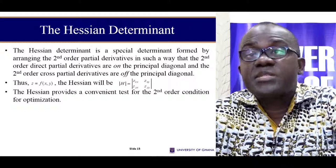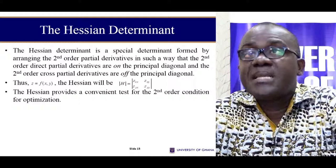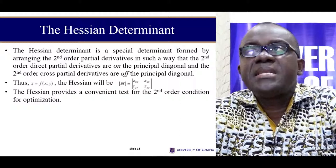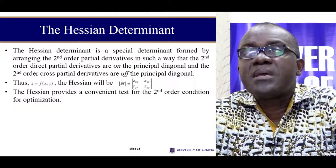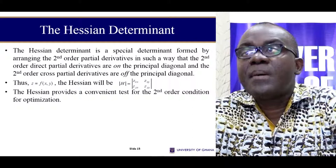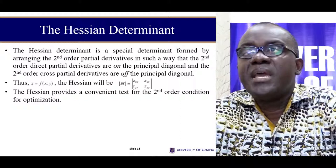To be able to do that, we have to first specify the Hessian determinant. Formally, the Hessian determinant is a special determinant formed by arranging the second order partial derivatives in such a way that the second order direct partial derivatives are at the principal diagonal. These are the second order partials. We have the other diagonals as you can see, and then we have the cross second order partial derivatives at the other sides.